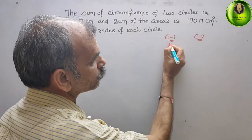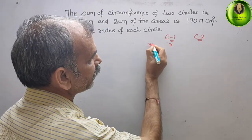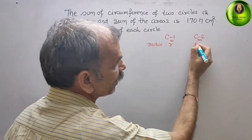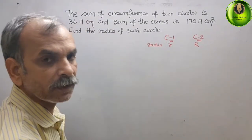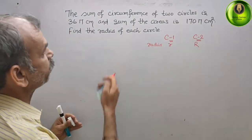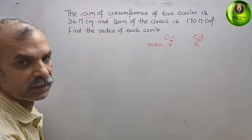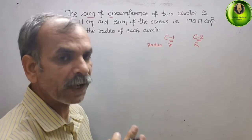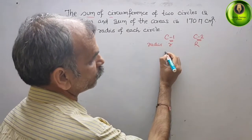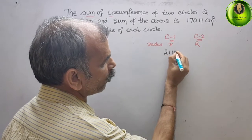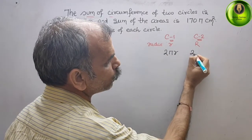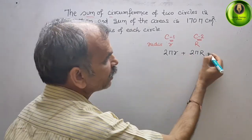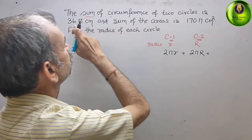We will take the radius of the first circle as small r and the radius of the second circle as capital R. As per the statement, the formula for circumference is 2πr. So we write 2π small r plus 2π capital R, and their sum is equal to 36π.